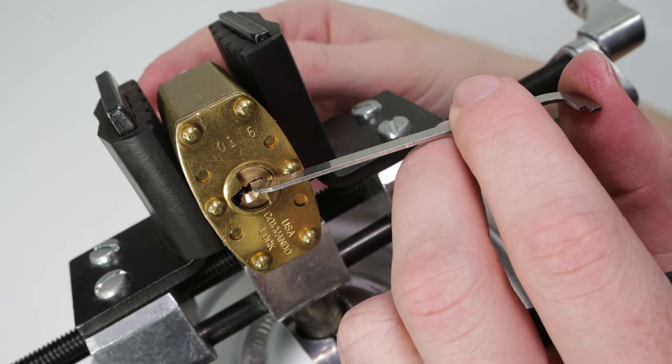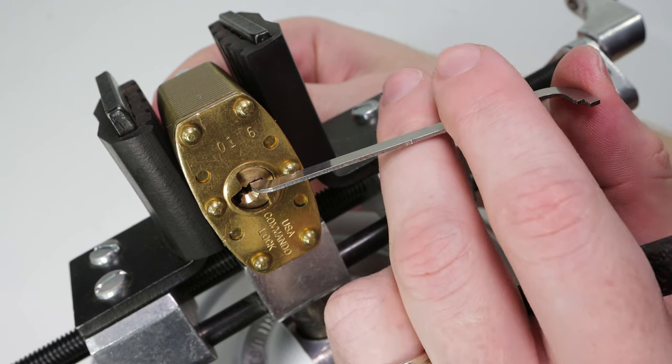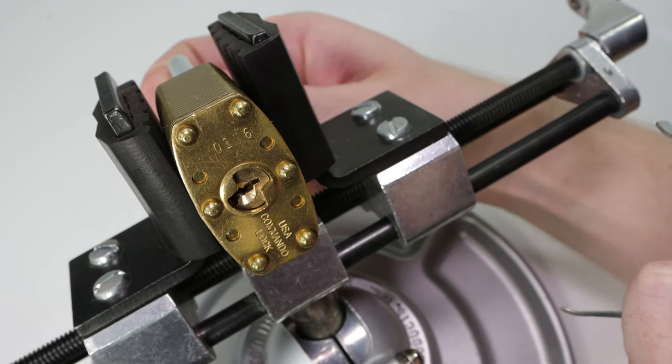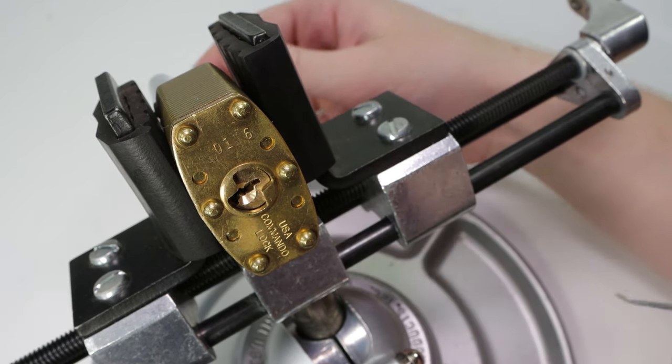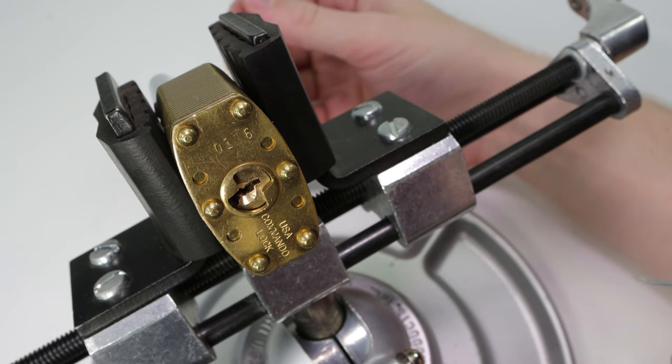So we were able to get that open one, two, three, four, five. This is a dead core lock. Shackle opens up right in the back, and that's what it took to get this lock open.